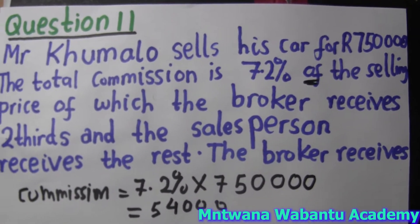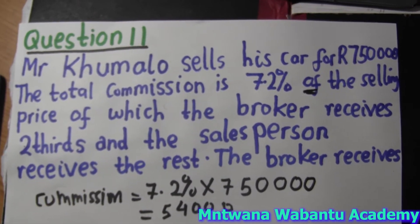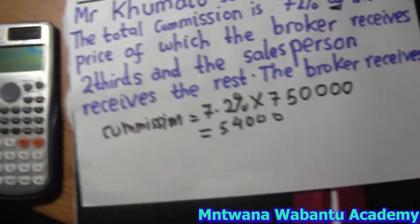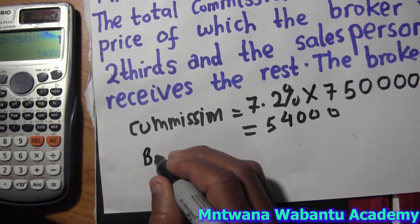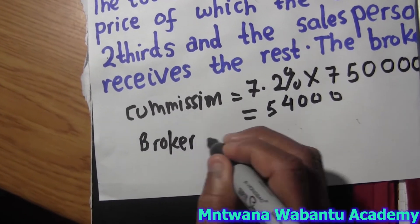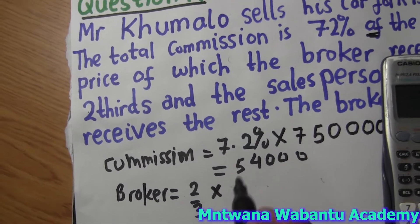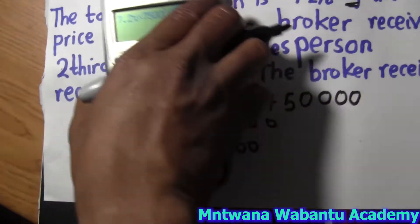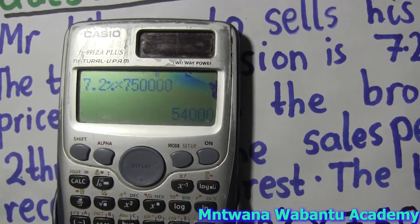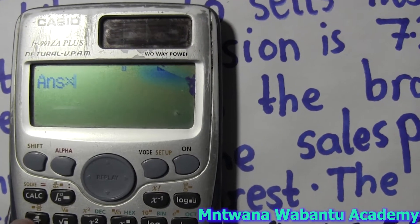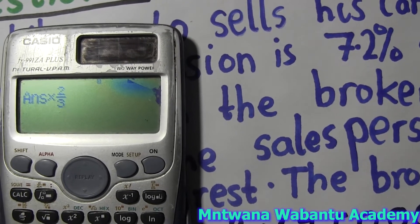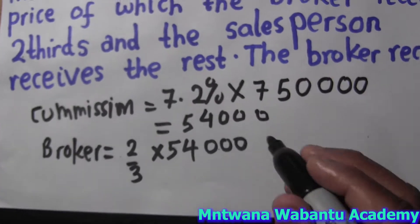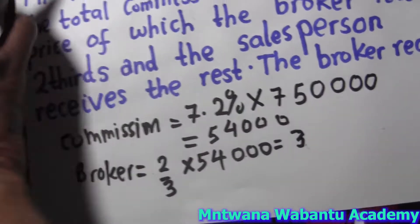After calculating the commission, the broker is going to receive two-thirds of that commission amount. So the broker gets two-thirds of R5,400. Multiplying that amount by the fraction two-thirds gives the broker's share, which comes out to R3,600.